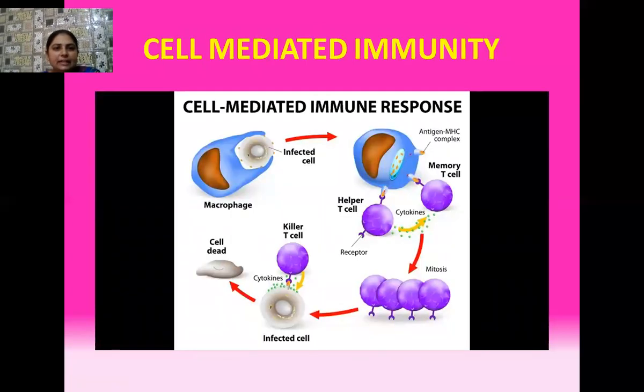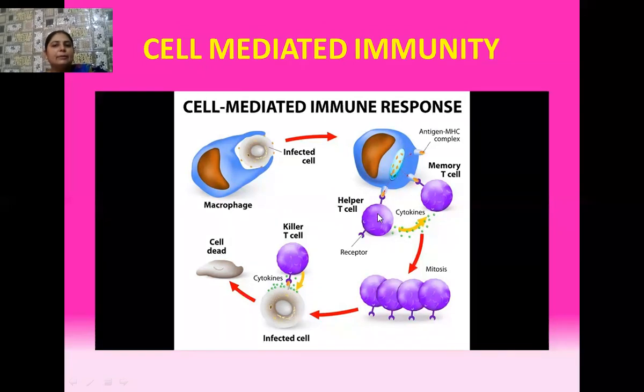This is the diagram of cell-mediated immunity. Different types of T lymphocytes are present: helper T cells, killer T cells, and memory T cells.